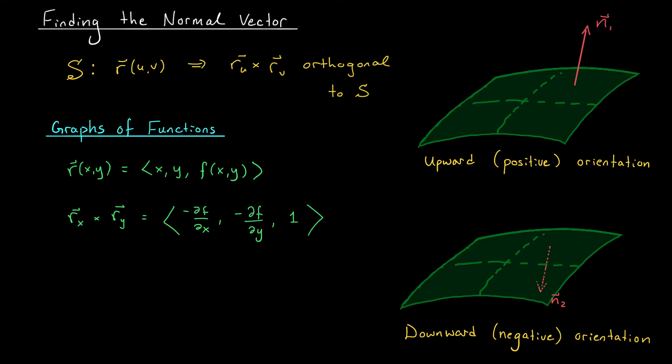If you think about this for a second, though, you'll realize that at any given point on our surface, there are actually two unit normal vectors. If this is one of them, then the other can be obtained by flipping it in the opposite direction, by multiplying it by minus one. So which of these normal vectors should we use? Does it matter? It turns out it does matter.